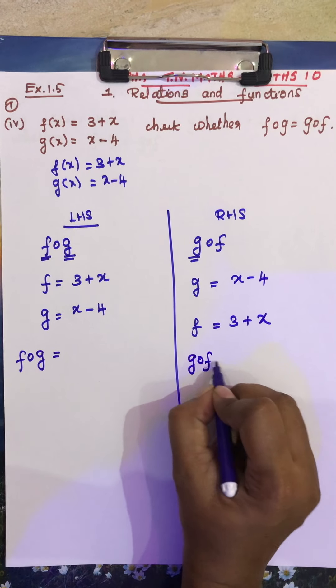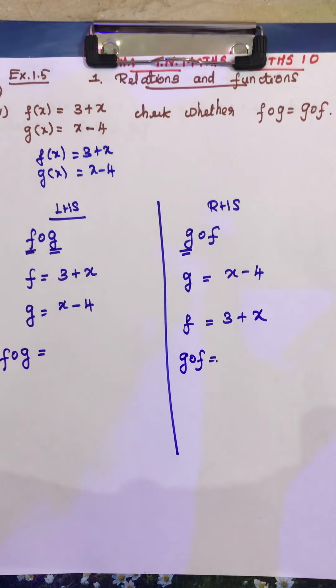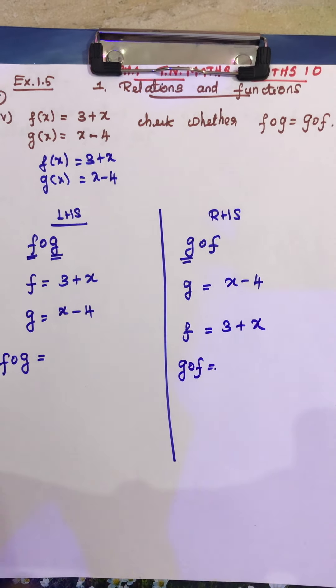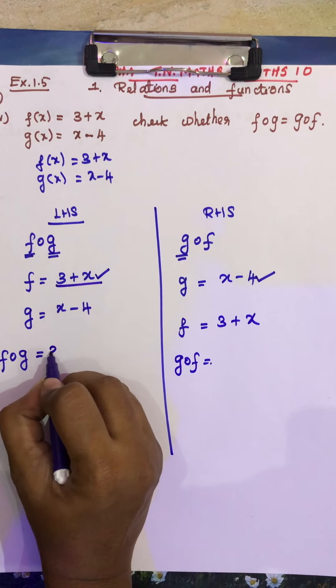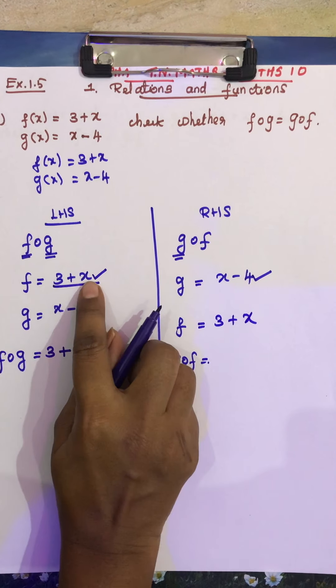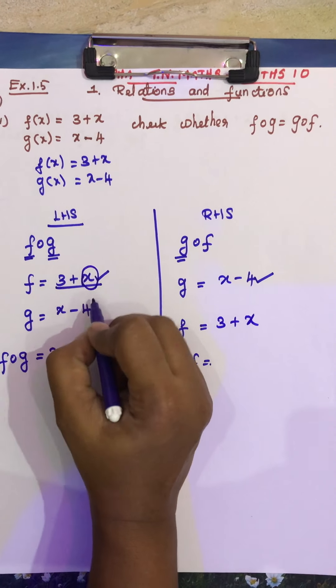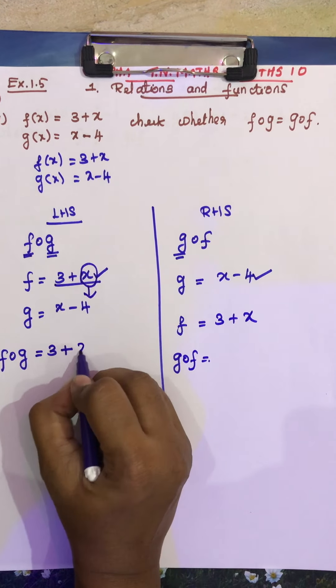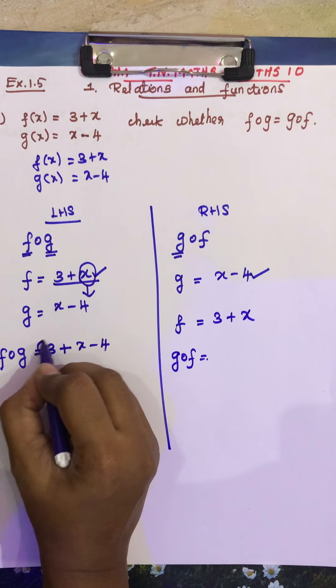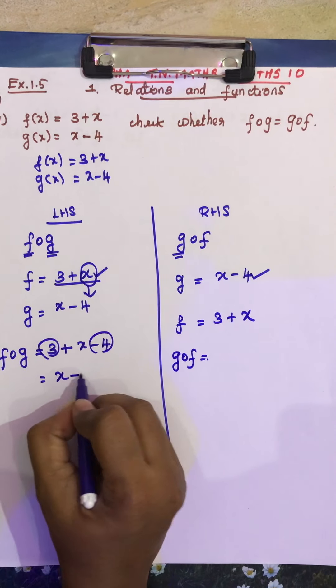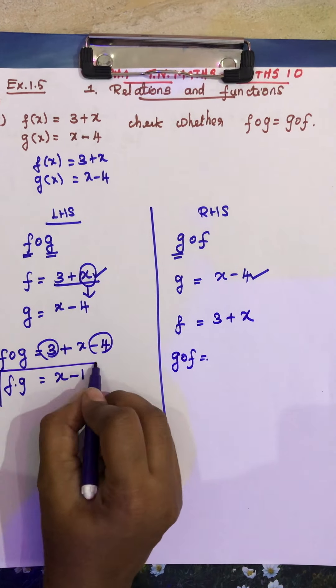g dot f. Okay, see now what we are doing, first man all function. First thing is 3 plus x, so here is x. If there is any function, see now x, here is plus 3, so minus 4, so here is f dot g.